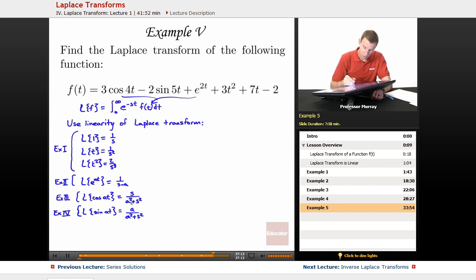So here's my Laplace transform for cosine of at. So the Laplace transform of f is from the 3 cosine of 4t, I'm going to get 3. Now cosine of 4t is going to give me s over 16 plus s squared, because the a is 4 there. Minus 2 times the sine of 5t. Sine gives me a over a squared plus s squared. a is 5, so 5 over 25 plus s squared.